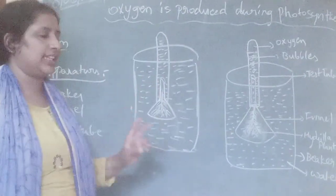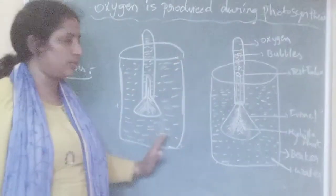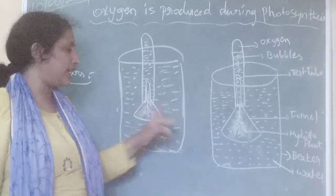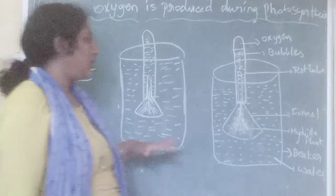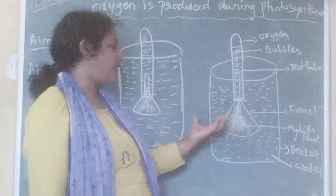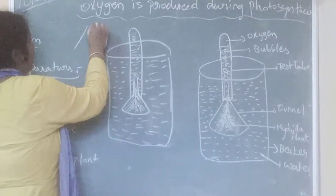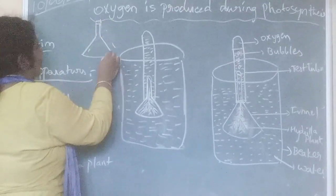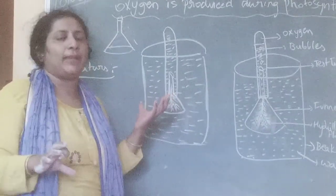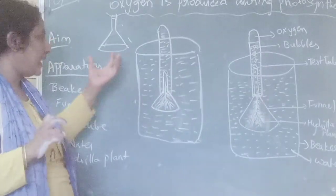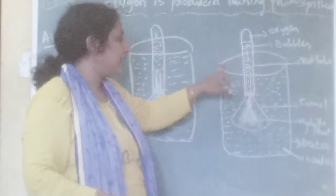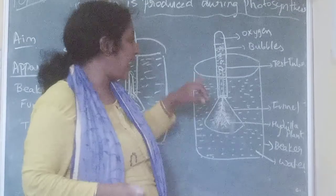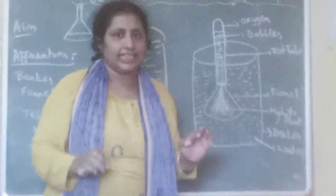You should prepare two sets for this experiment. Take two beakers, two test tubes, two funnels, and two hydrilla plants. Take a hydrilla plant — which is an aquatic plant — and keep it in a funnel. Keep that funnel in a beaker containing water.